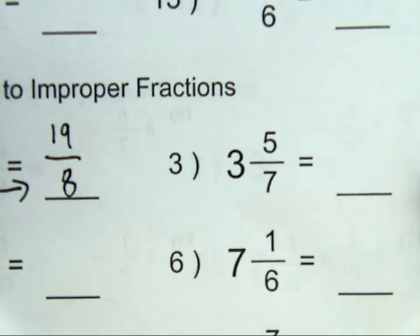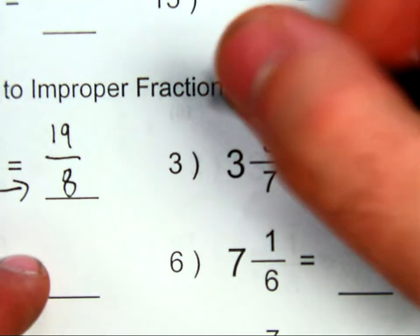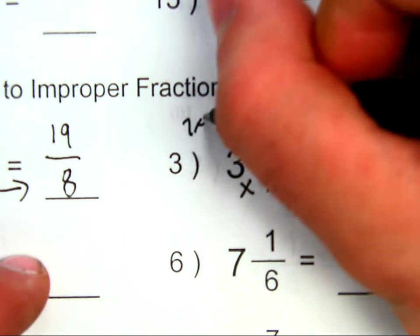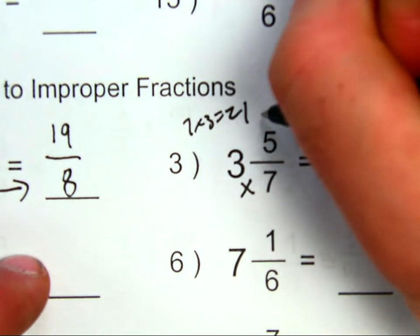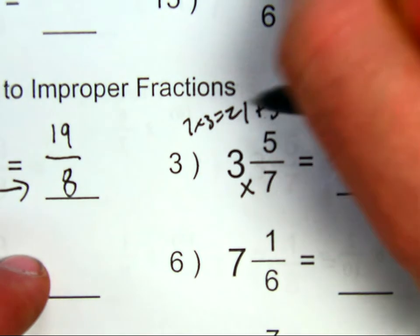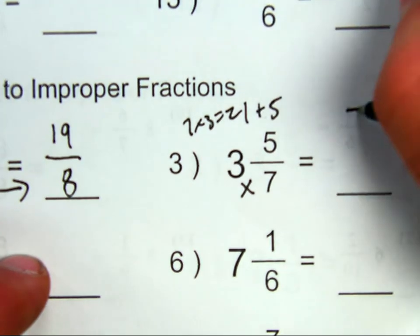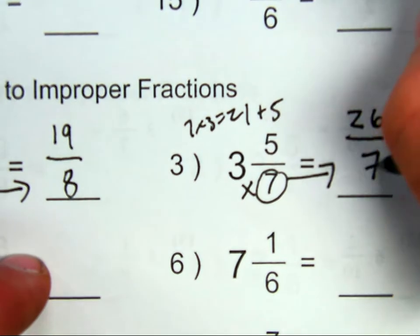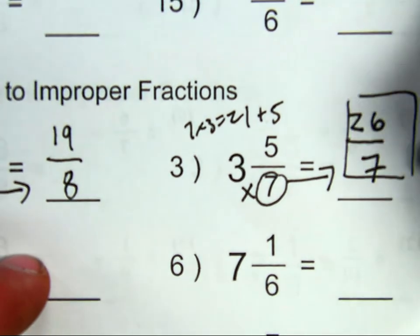I'm going to do one more just to make sure we got it. 3 and 5 sevenths. I multiply 7 times 3. That's 21 plus 5. 21 plus 5 is 26. I keep my denominator. 26 over 7 is my final answer.